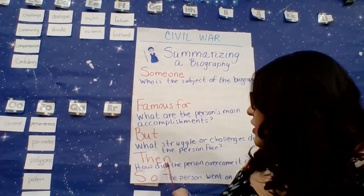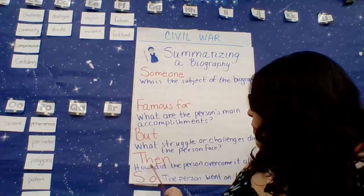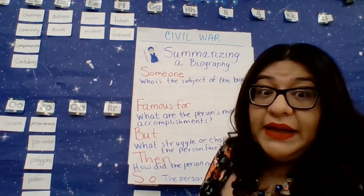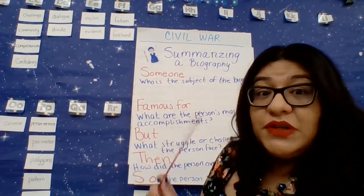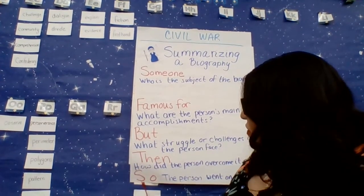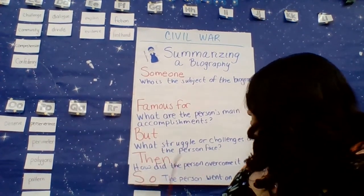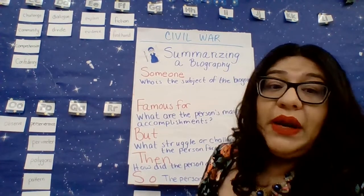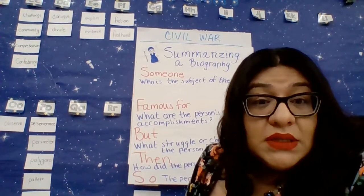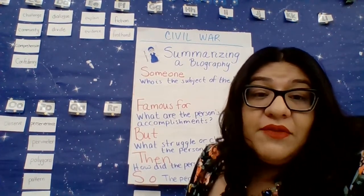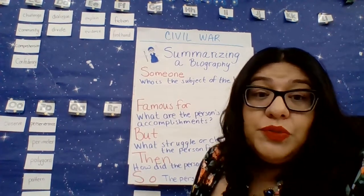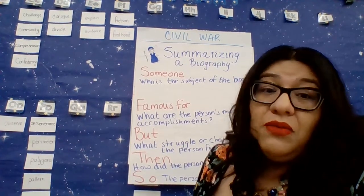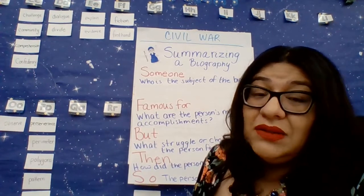How did the person overcome it all? We always talk about perseverance — how did this person persevere? And then the very last part: so the person went on to do what? Sojourner Truth went on to write books, to talk to people about slavery, and how she was able to be the first woman to sue someone in court for slavery. So that's a big deal.